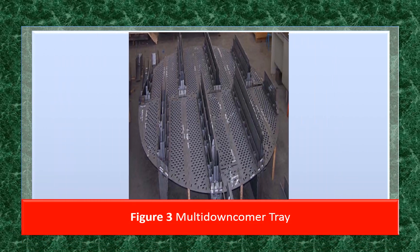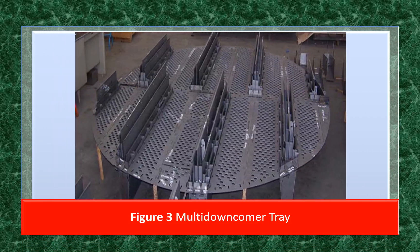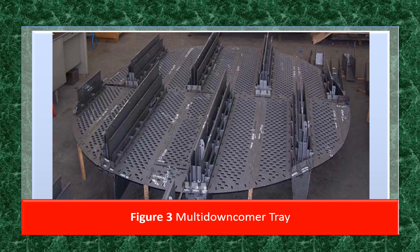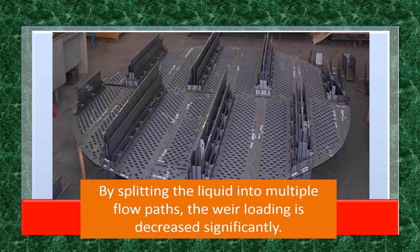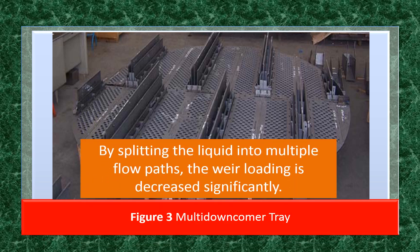Shown in this figure is a multi-downcomer tray. By splitting the liquid into multiple flow paths, the weir loading is decreased significantly.